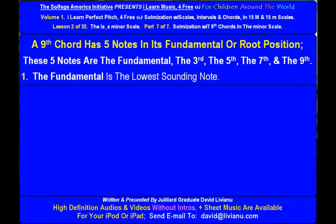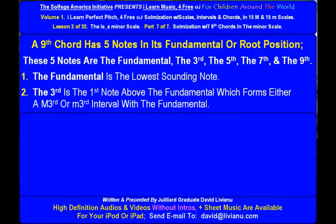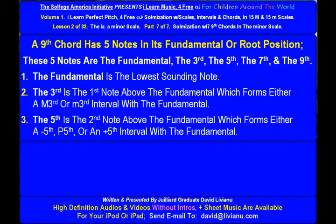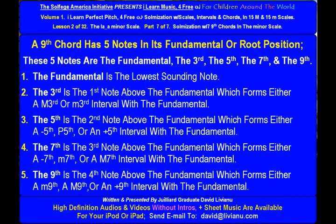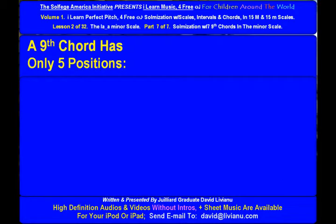The fundamental is the lowest sounding note. The 3rd is the first note above the fundamental, which forms either a major 3rd or minor 3rd interval with the fundamental. The 5th is the second note above the fundamental, forming either a diminished 5th, perfect 5th, or augmented 5th interval. The 7th is the 3rd note above the fundamental, forming either a diminished 7th, minor 7th, or major 7th interval. The 9th is the 4th note above the fundamental, forming either a minor 9th or augmented 9th interval. A 9th chord has only 5 positions.